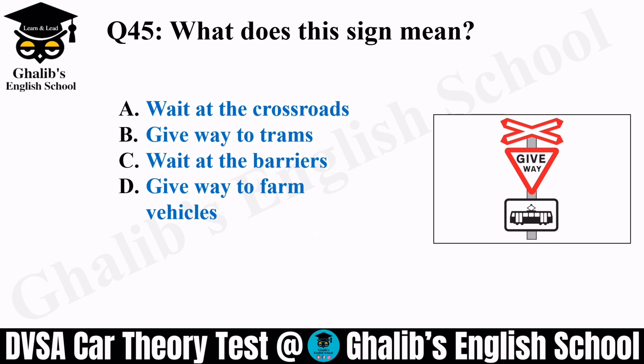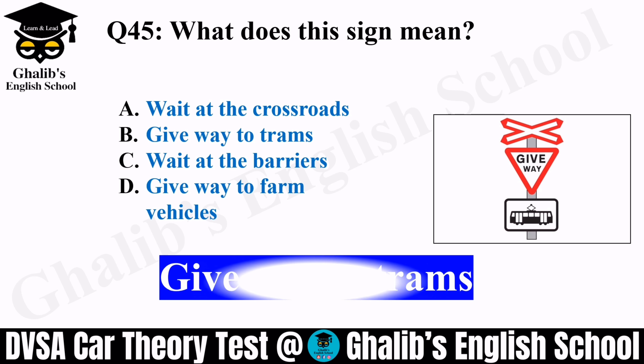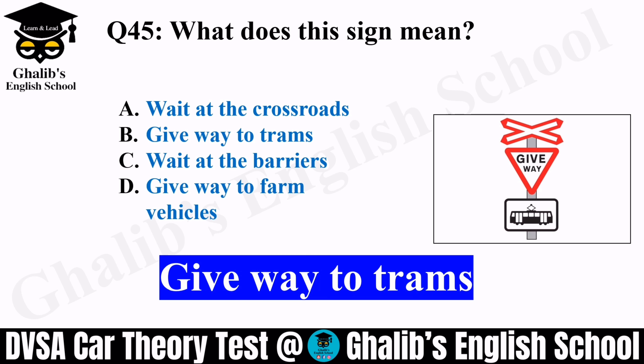Question 45. What does this sign tell you? Options: wait at the crossroad, give way to trams, wait at the barriers, or give way to farm vehicles. This sign means give way to trams.